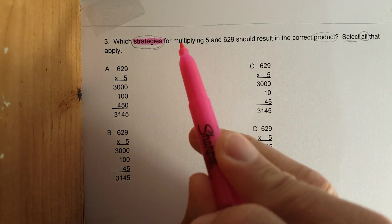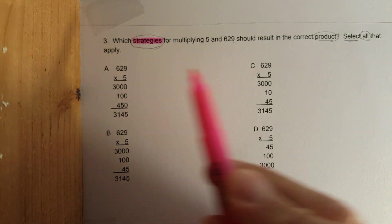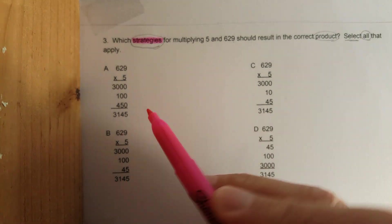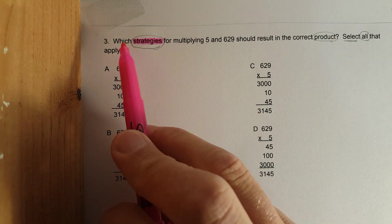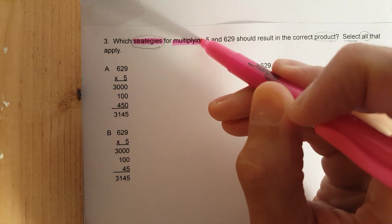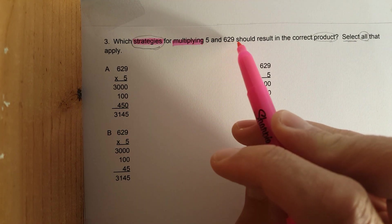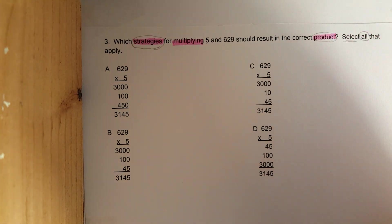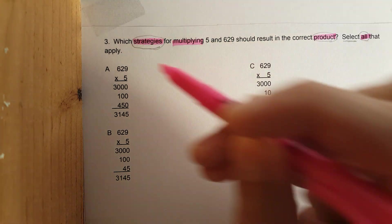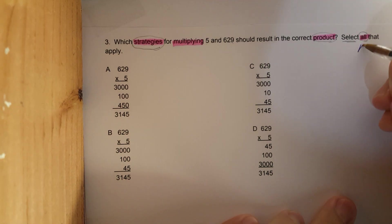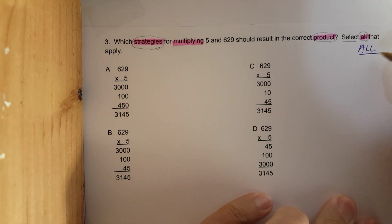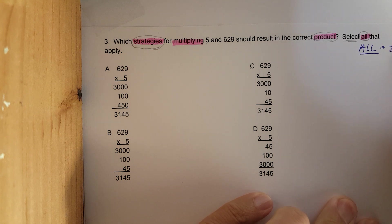Remember the last video for problem number two, we started putting important words in pink. Your math teacher may use whatever strategies or colors for annotating. I like using pink because the words really pop out. Which strategies for multiplying 5 and 629 should result in the correct product? Select all that apply. This is test prep 101 - when you see the word 'all' that almost always means at least two or more answers.